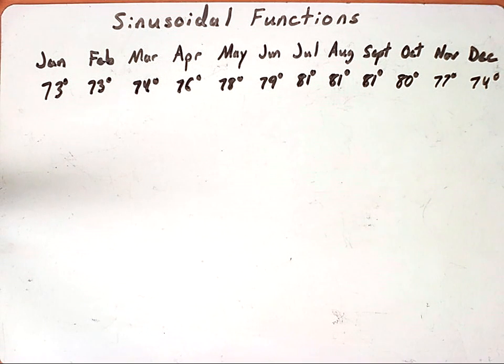Today we're going to look at temperature, and so on the board right now I have the average temperature for the city of Honolulu, Hawaii from January to December written out. Looking at this data set we're going to be able to write an equation for the function, whichever it is sine or cosine which we'll figure out in a moment, and then plug some values in and see what we get from our model.